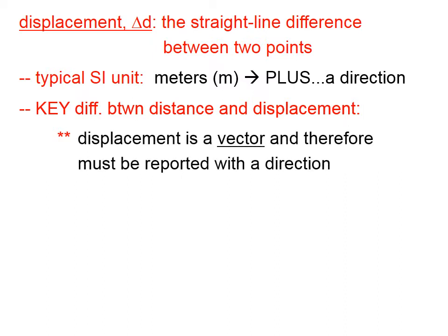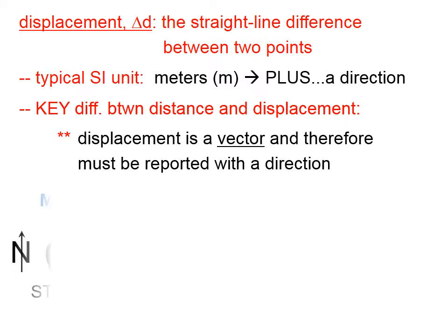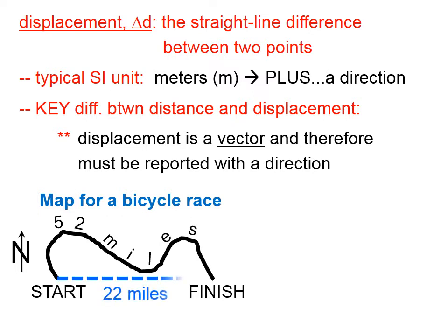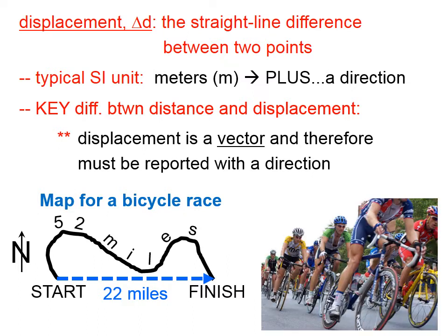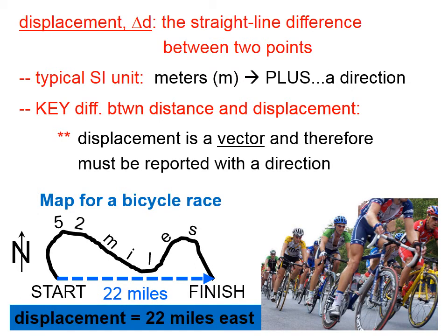The key difference between distance and displacement: displacement is a vector and therefore must be reported with a direction. So if we have here a map for a bicycle race, let's say that the distance traveled is 52 miles. The displacement is simply 22 miles to the east. Not just 22 miles, but 22 miles to the east.